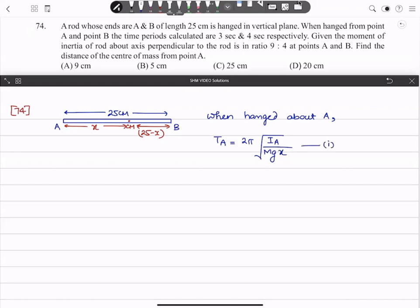Similarly, when hanged about B, the time period TB = 2π√(IB/mg(25-x)). The distance from B will be 25 minus x.